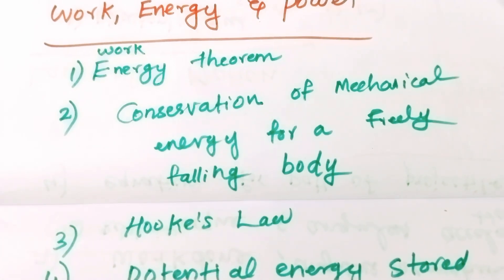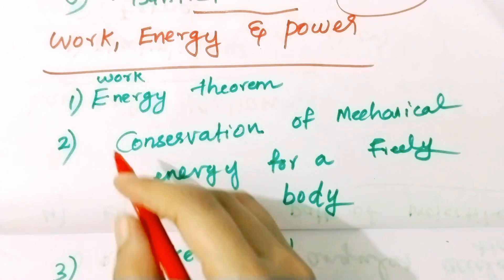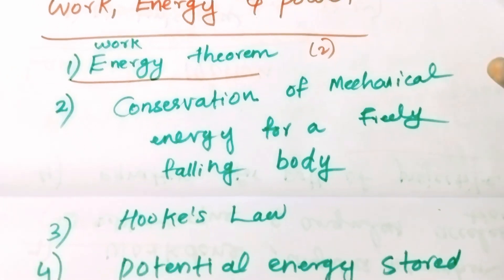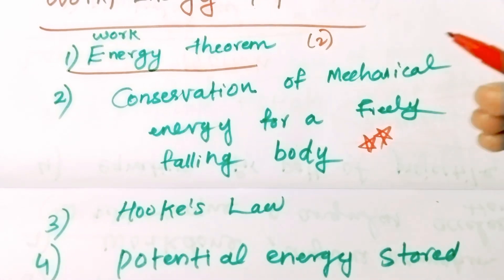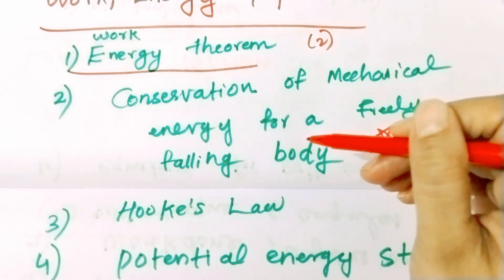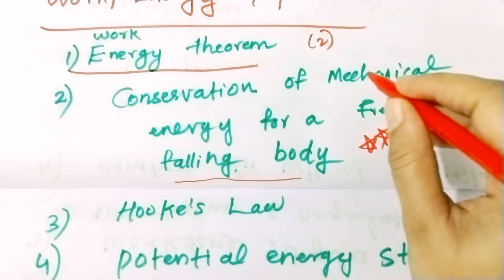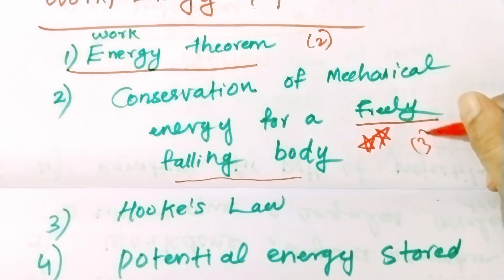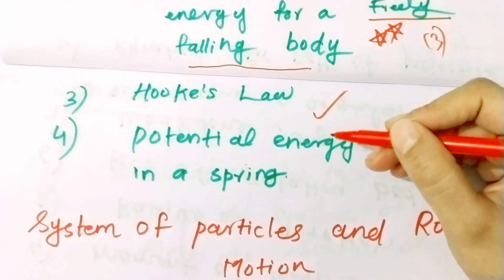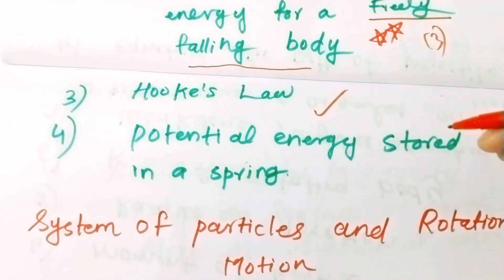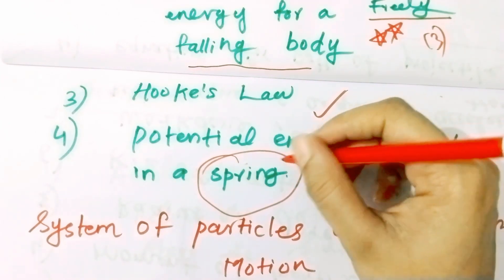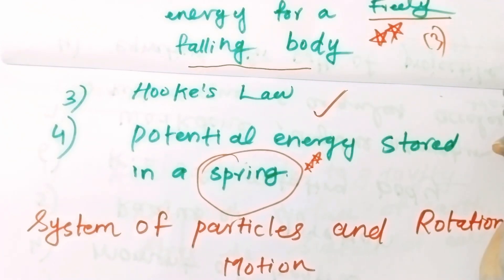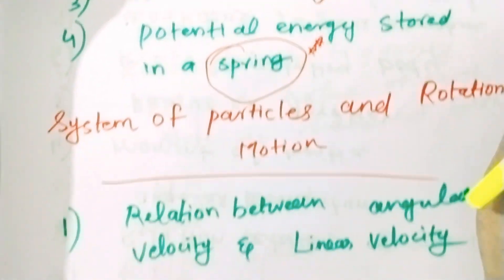Work, energy, and power: in this chapter, the work-energy theorem is a small derivation — give it a star. Conservation of mechanical energy for a freely falling body is worth 2 to 3 marks — give it a star. Then, the potential energy stored in a spring using Hooke's Law — give it a star, as this is a frequently asked question.